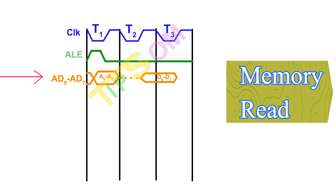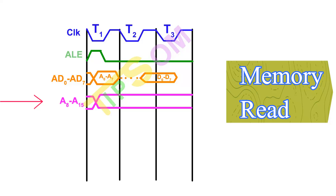Next is AD0 to AD7. First, the address will be accessed on AD0 to AD7, then the data will be accessed. So in the first T state the address is placed, and then during the second half of T2 and into T3 the data is accessed — quite similar to the opcode fetch. Next is A8 to A15, which is also the same as opcode fetch: it becomes active from the first half of T1 and carries only the higher-order address.